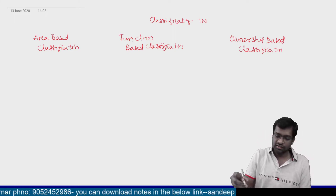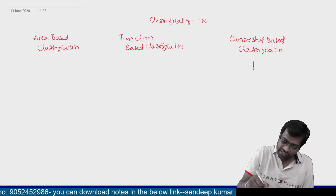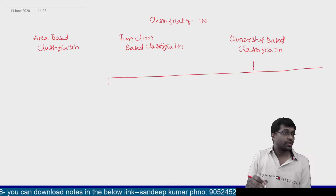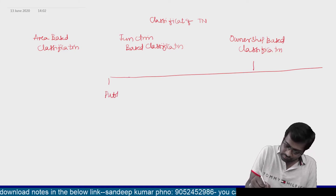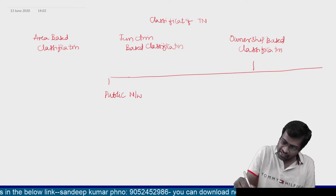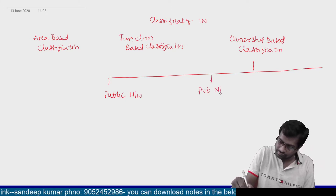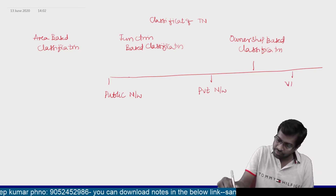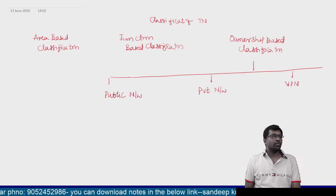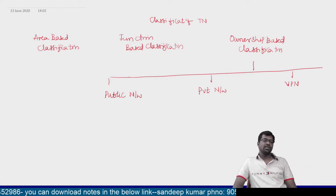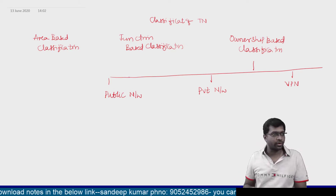In ownership-based classification, we have three types. The first one is a public network, the second is a private network, and the third one is VPN — Virtual Private Network.